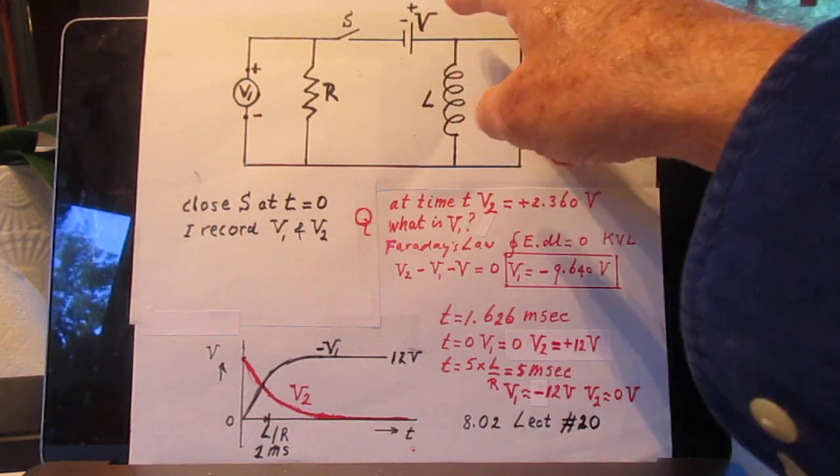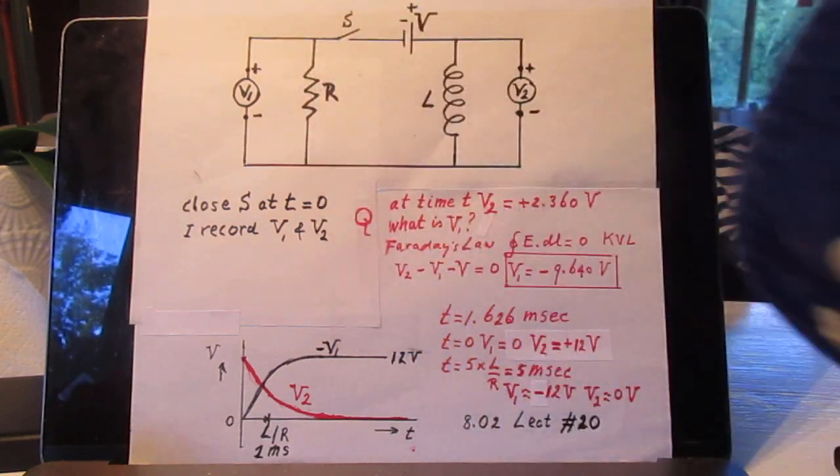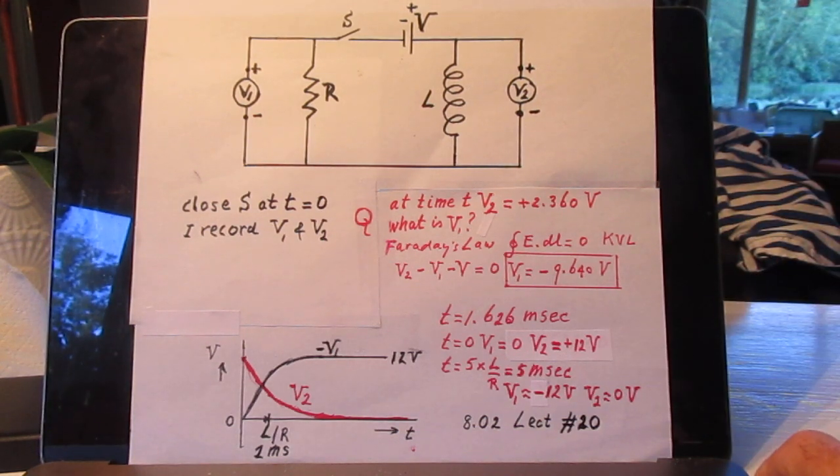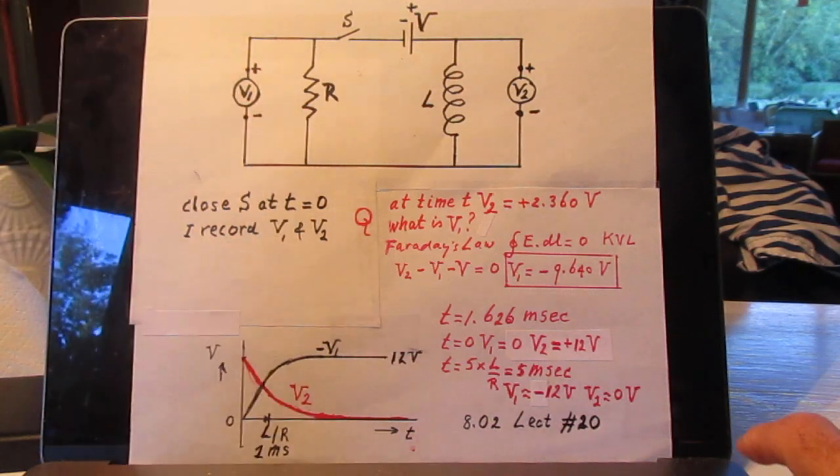So, all the current goes then through the self-inductor and it goes through the resistor R. Potential difference between here and here is plus 12 volts. Between here and here is minus 12 volts. Okay then, if all this is new for you, then I would suggest you watch lecture number 20 of 802.